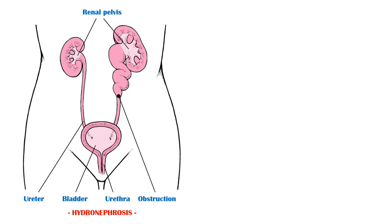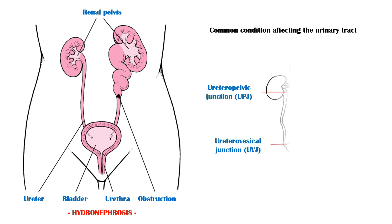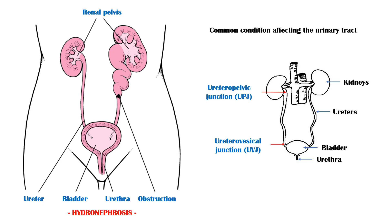Hydronephrosis is a common condition affecting the urinary tract. The urinary tract consists of the kidneys, ureters, bladder, and the urethra. The ureteropelvic junction is the site where the kidneys and the ureters join, and the ureterovesical junction is the site where the bladder and the ureters join.